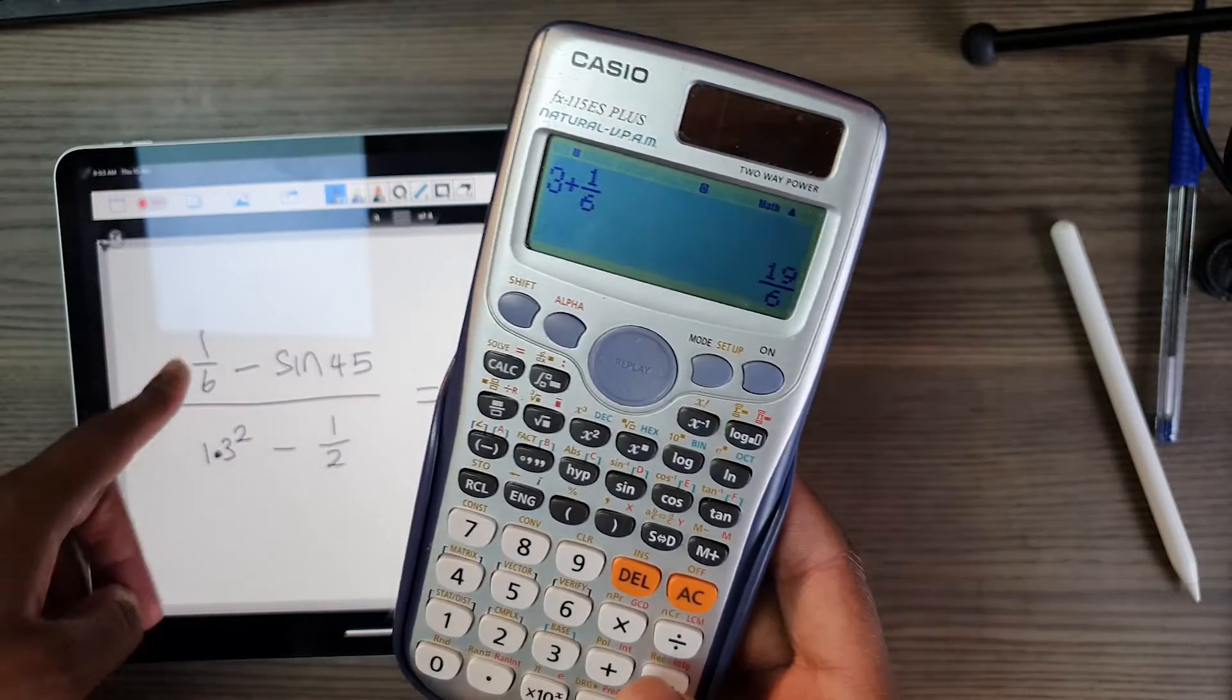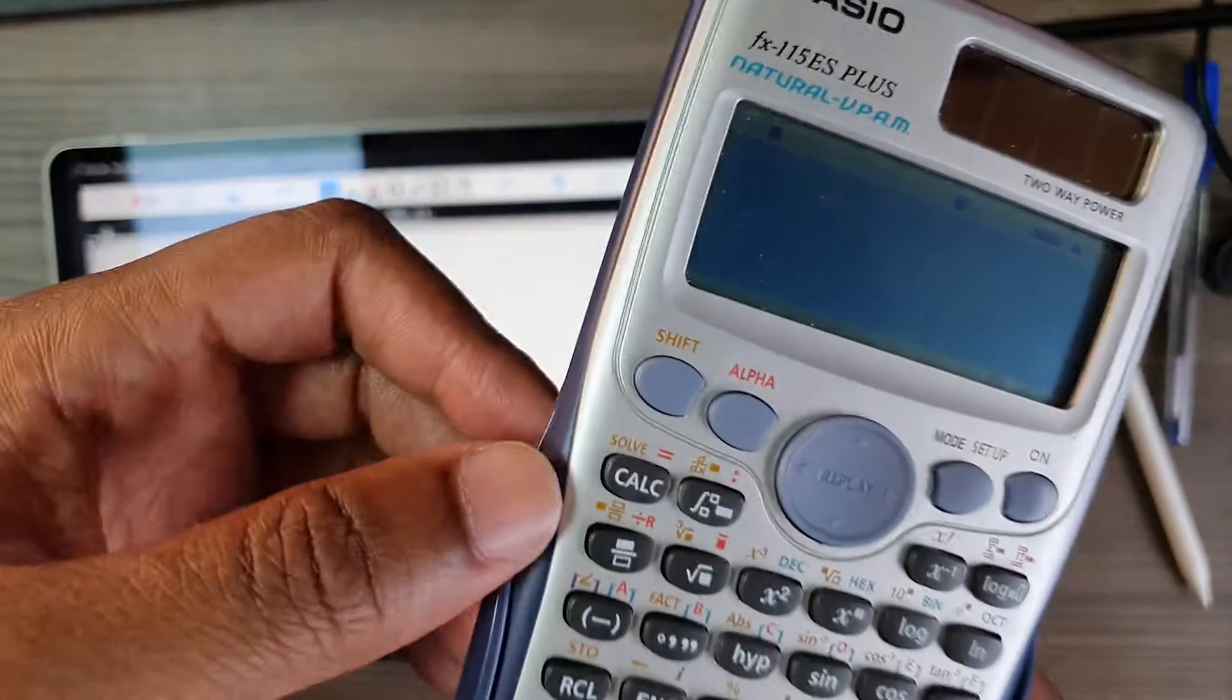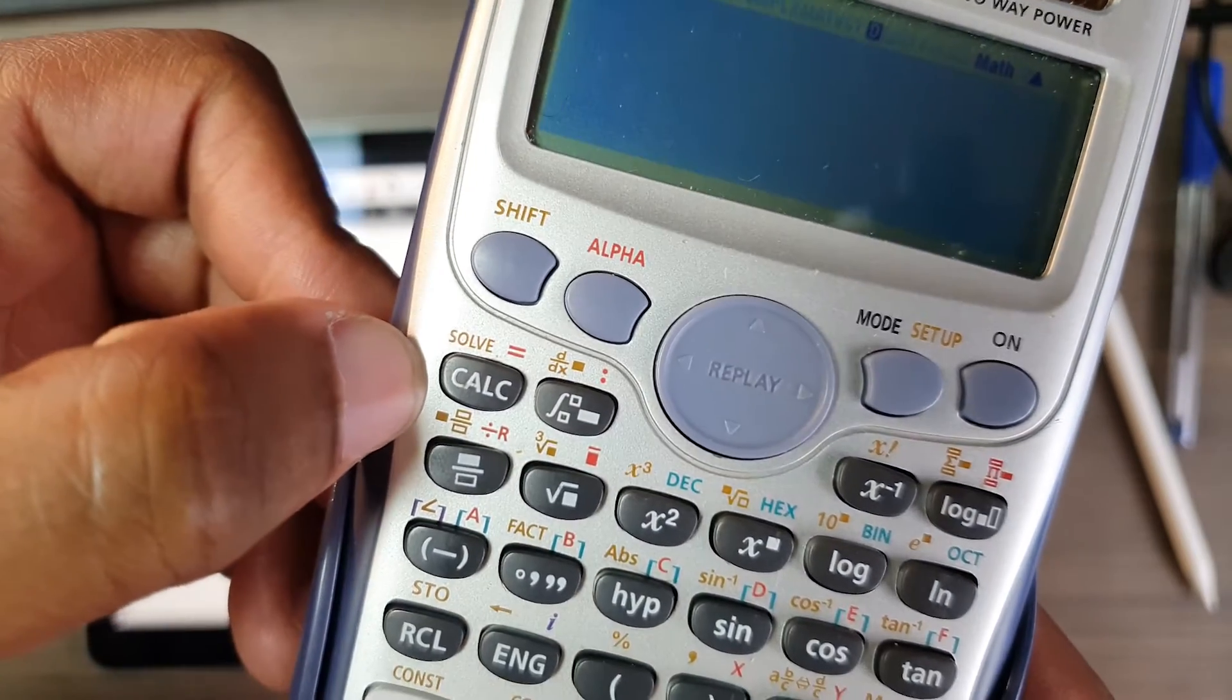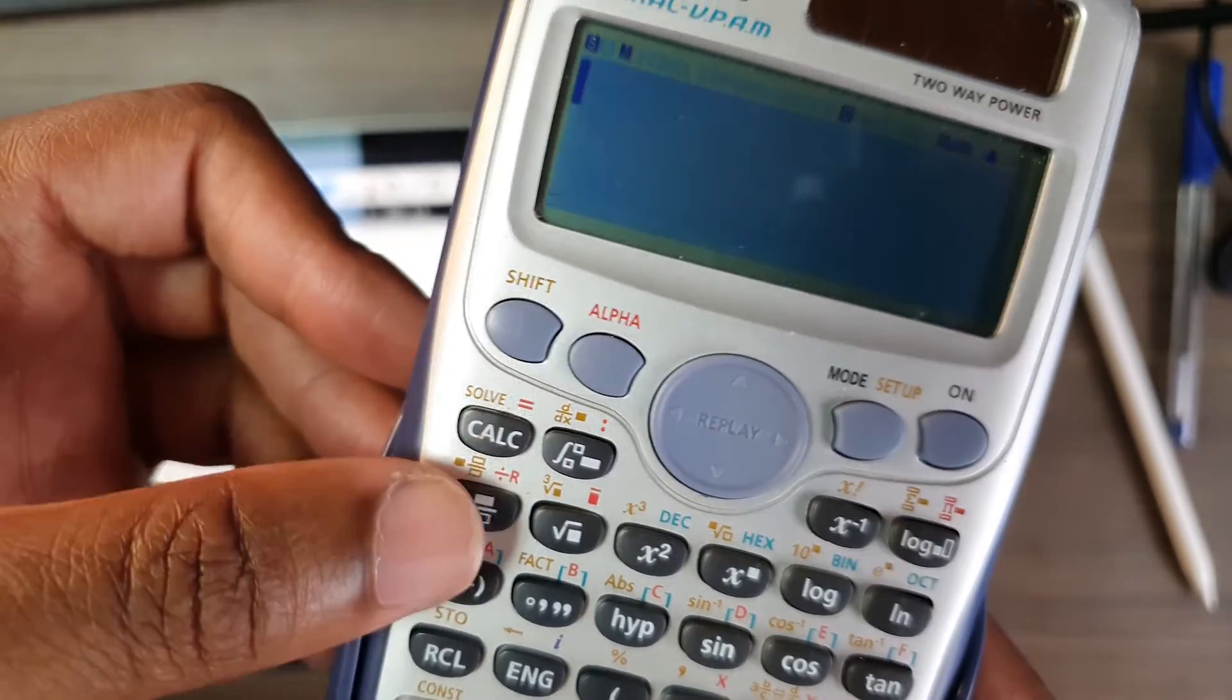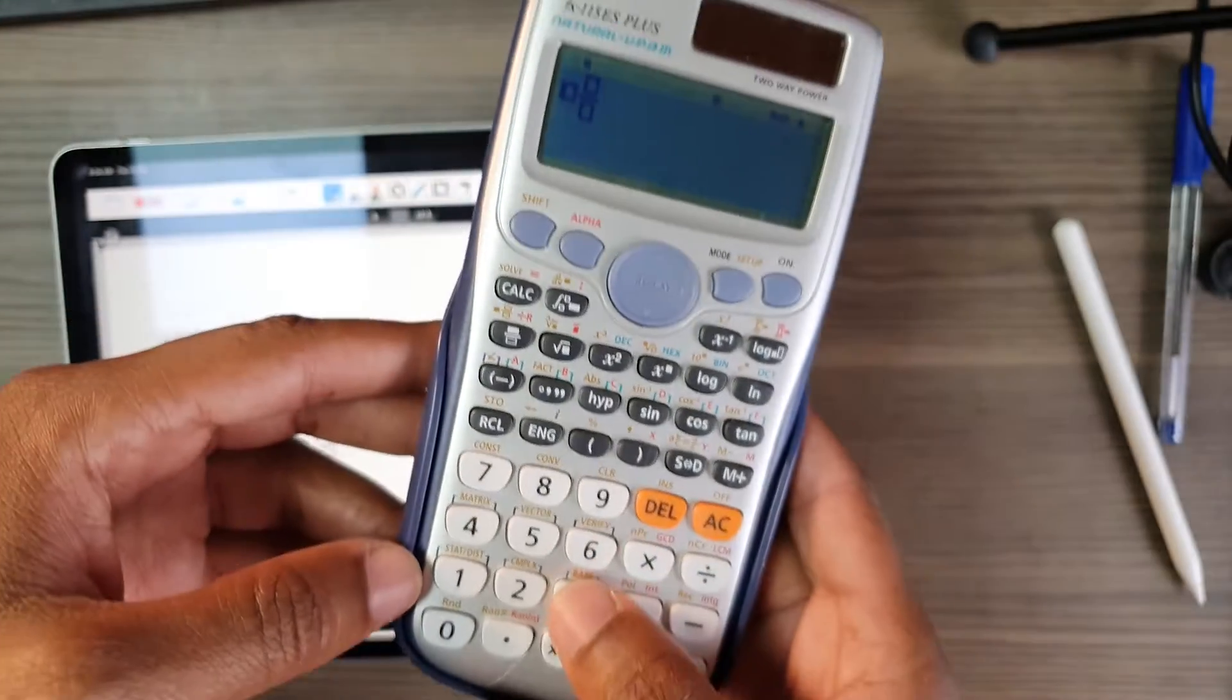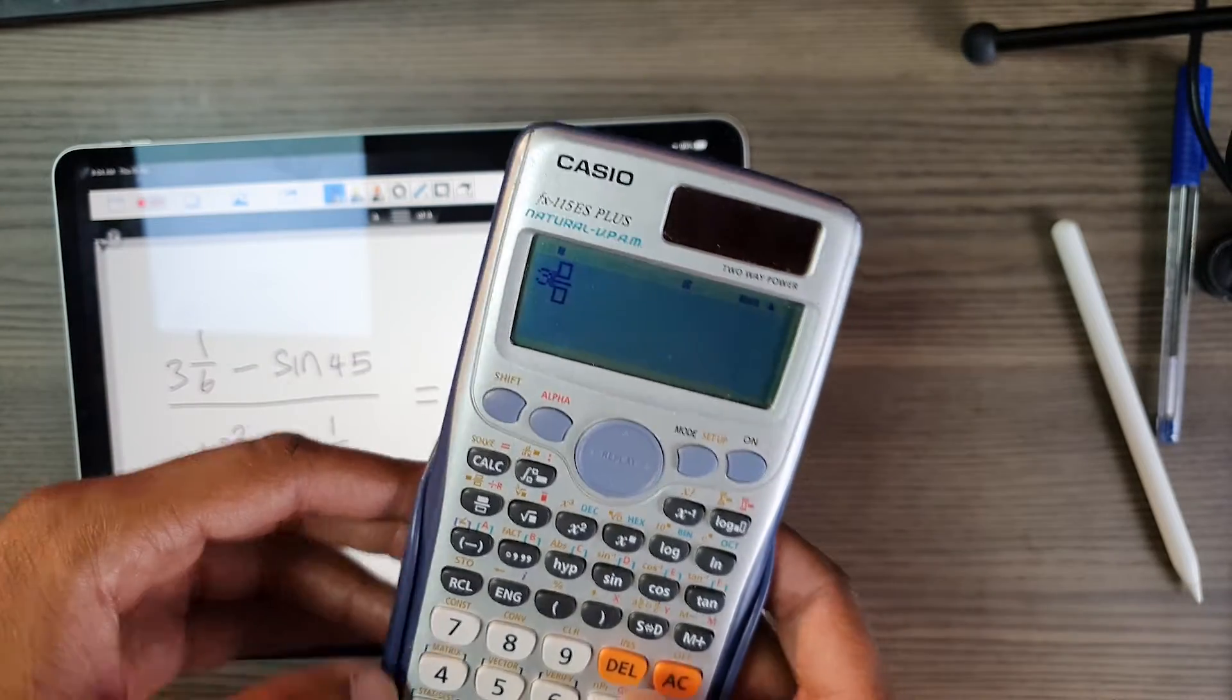The best thing to do is actually make use of this. I don't know if you see, there is a mixed number option. So you can actually press shift and that, and you get your nice three and one six.